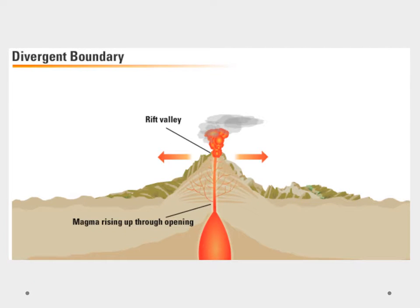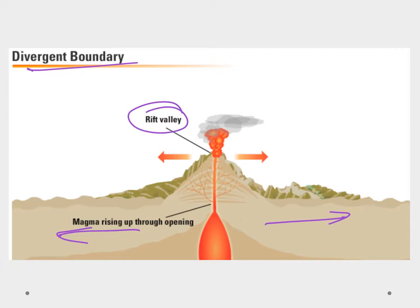What about a divergent boundary? With divergent boundaries, the plates are moving away from each other, creating a gap called a rift valley. That gap is where magma rises up and we see volcanic activity. In Africa, there's a rift valley where volcanoes like Mount Kilimanjaro are forming. This is also how we form our mid-oceanic ridges.